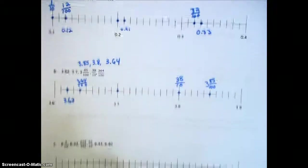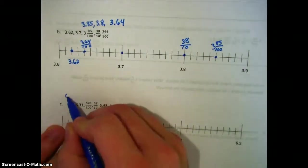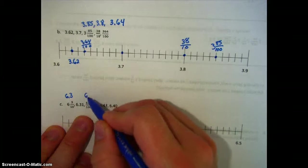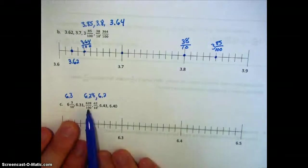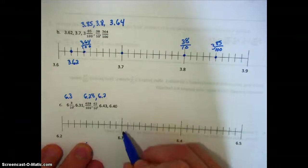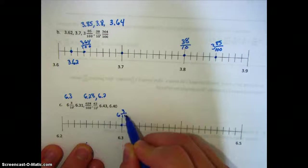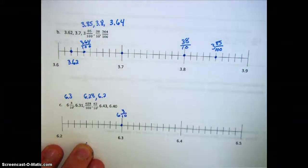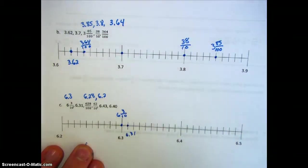Moving on to the last number line, we're now dealing with six ones. Let's convert them all to decimals: six and three-tenths, six and twenty-eight hundredths, and six and two-tenths. Starting to plot: six and three-tenths, and six and thirty-one hundredths — go to six and three-tenths and then add one more hundredth.